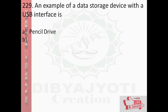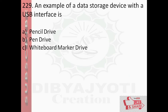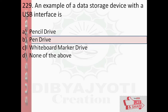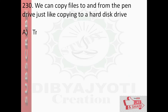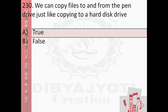Question number 229: One type of storage device is option B, pen drive. Question number 230: We can copy files to and from the pen drive just like copying to a hard disk drive. Options are option A, true; option B, false. The answer is option A, true.